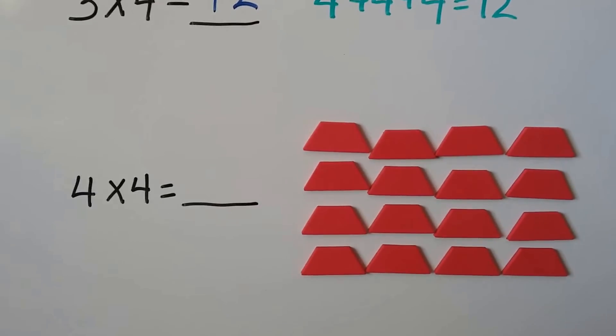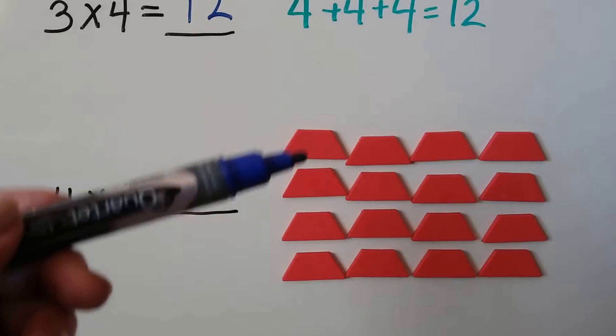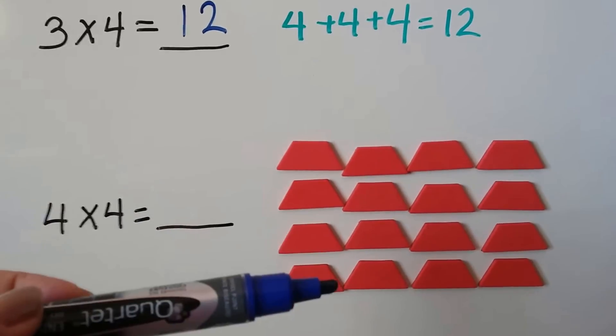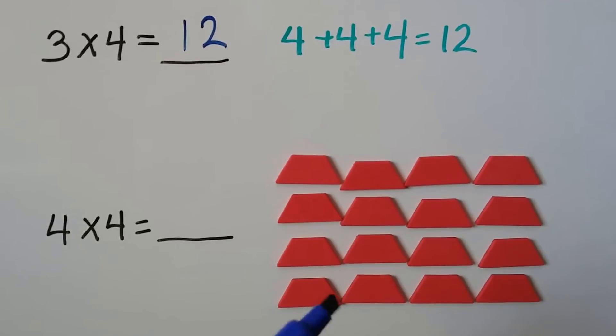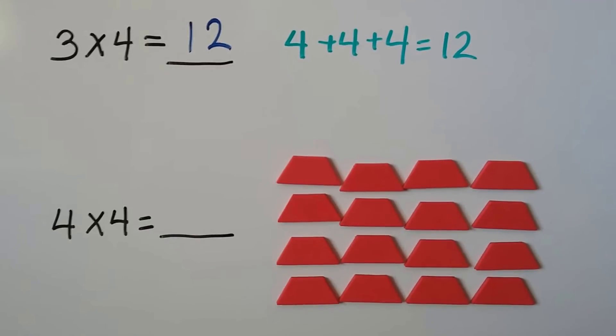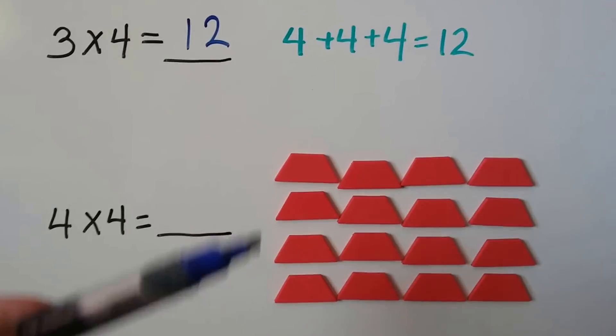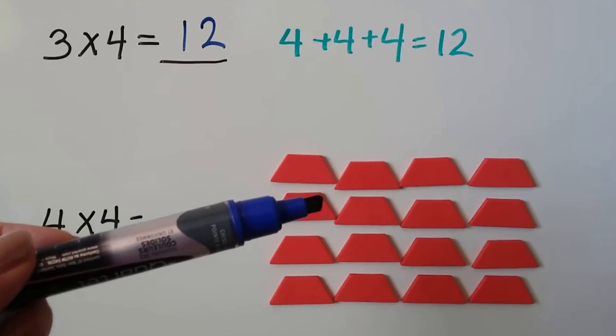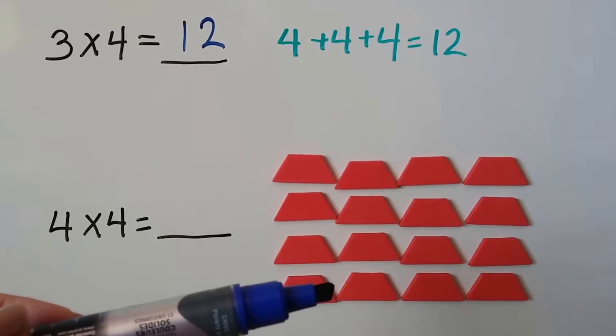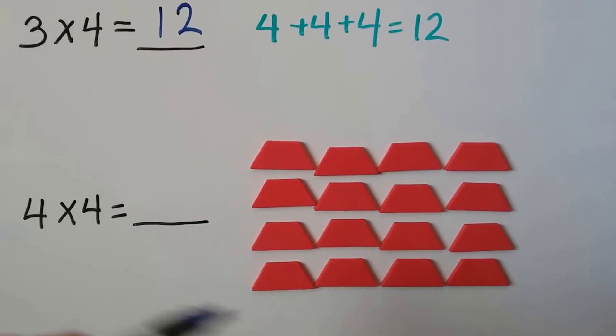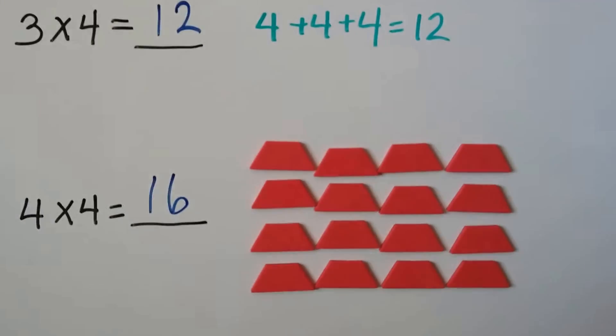Here we're using counters. We have 4 times 4. We have 1, 2, 3, 4 rows of 4. So each row has 4 trapezoids in it. We have 4 times 4, and that's 4 plus 4 is 8, plus 4 more is 12, plus 4 more is 16. 4 times 4 is equal to 16.